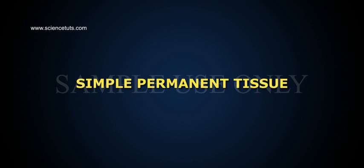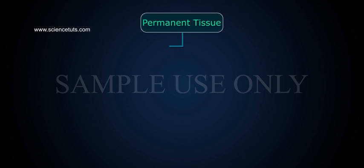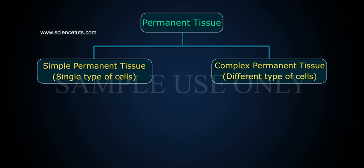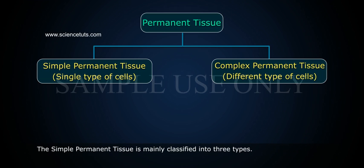Simple Permanent Tissue. Permanent tissue is divided into two types: Simple Permanent Tissue, which consists of a single type of cells, and Complex Permanent Tissue, which consists of different types of cells. The Simple Permanent Tissue is mainly classified into three types: Parenchyma, Colenchyma, and Sclerenchyma.